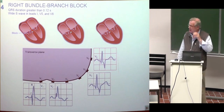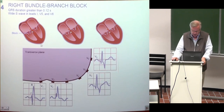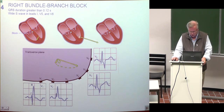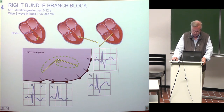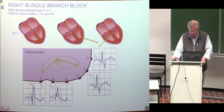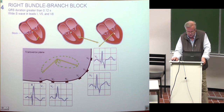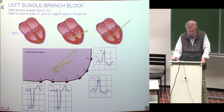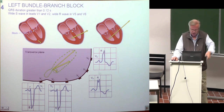Bundle branch blocks — right and left — change the activation in the ventricles. If the right bundle branch is cut, activation proceeds from the left heart up along the ventricular walls, not along the bundle branch, and then the whole ventricle is activated. The ventricular QRS loop looks characteristically different. Taking projections to the precordial leads gives the resulting signals. The same mechanism applies to left bundle branch block, where activation proceeds along the right bundle then along the ventricular wall in the opposite pattern.